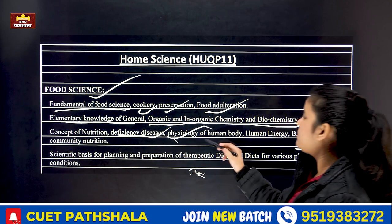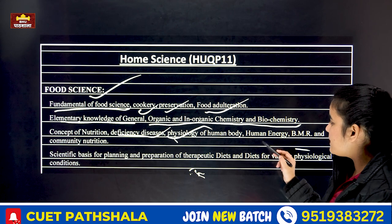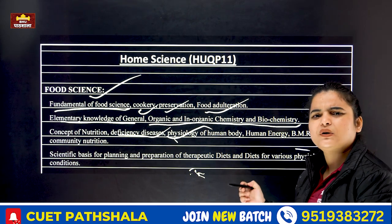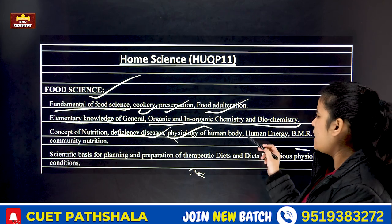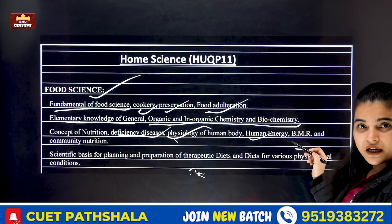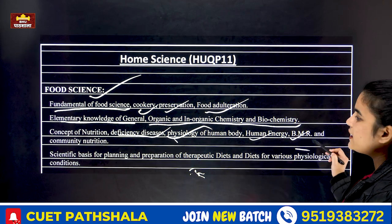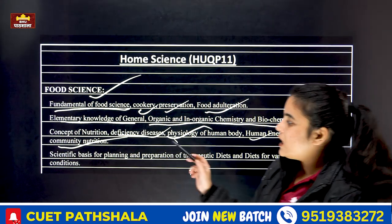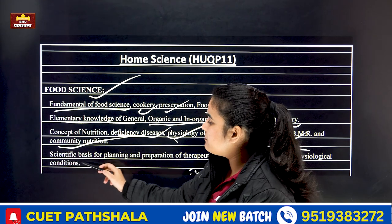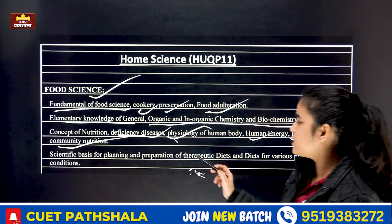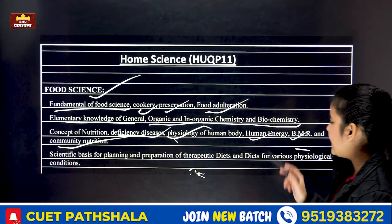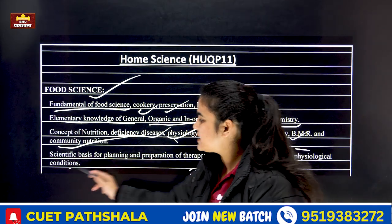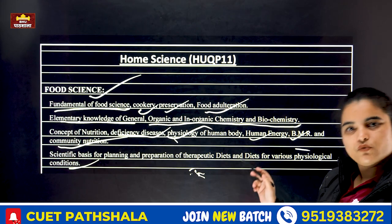We will study physiology of the human body and human energy — which nutrients and vitamins are found in which foods. We will also cover community and nutrition. This includes the scientific basis for planning and preparation of therapeutic diet and diets for various physiological conditions, and different types of diet.